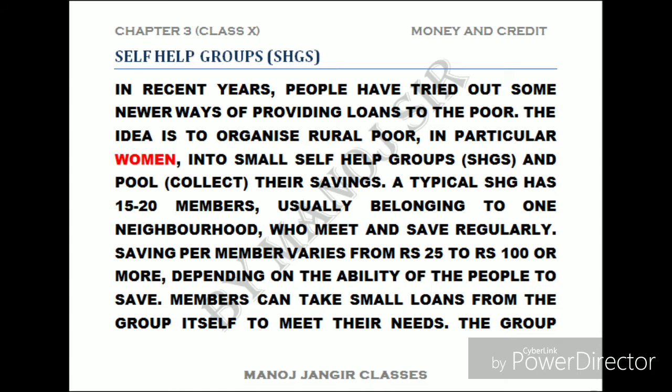In recent years, people have tried newer ways of providing loans to the poor. The idea is to organize rural poor, in particular women — which is most important, as these initiatives were designed to empower women. They are organized into small self-help groups, where they pool and collect their savings. A typical self-help group, or SHG, has 15 to 20 members.